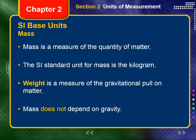Mass is a measure of the quantity of matter. The SI standard unit for mass is the kilogram. The standard for mass defined in Table 2-1 is used to calibrate balances all over the world. The mass of a typical textbook is about 1 kilogram. The gram, represented as g, which is one one-thousandth of a kilogram, is more useful for measuring masses of small objects, such as flasks or beakers. For even smaller objects, such as tiny quantities of chemicals, the milligram, mg, is often used. The milligram is one one-thousandth of a gram.